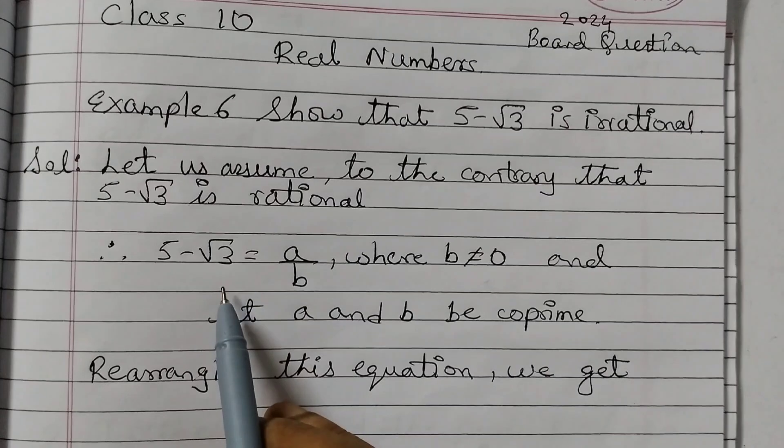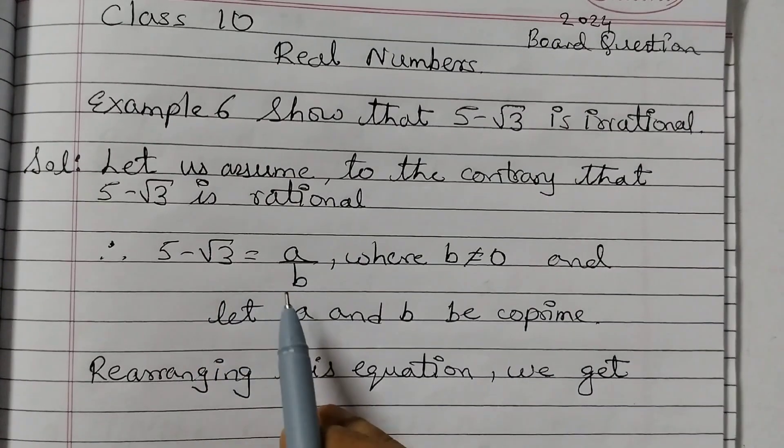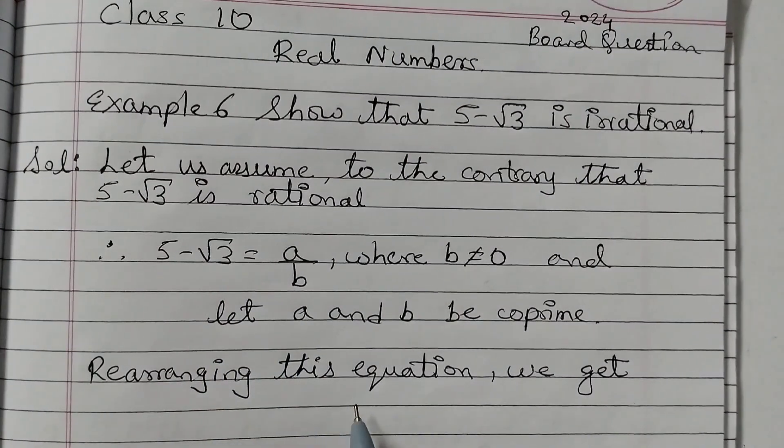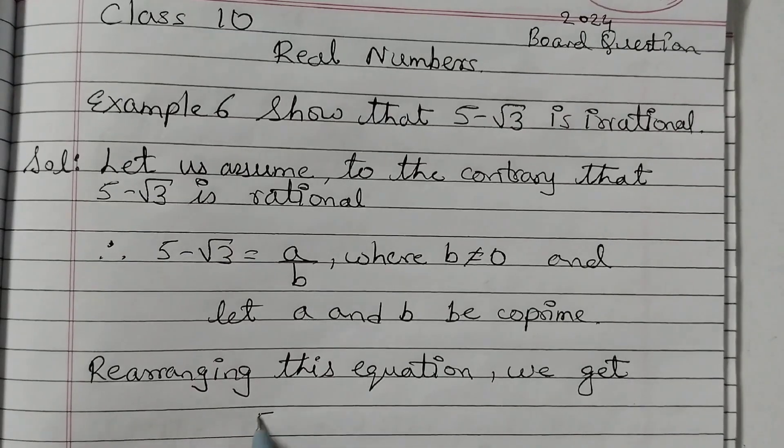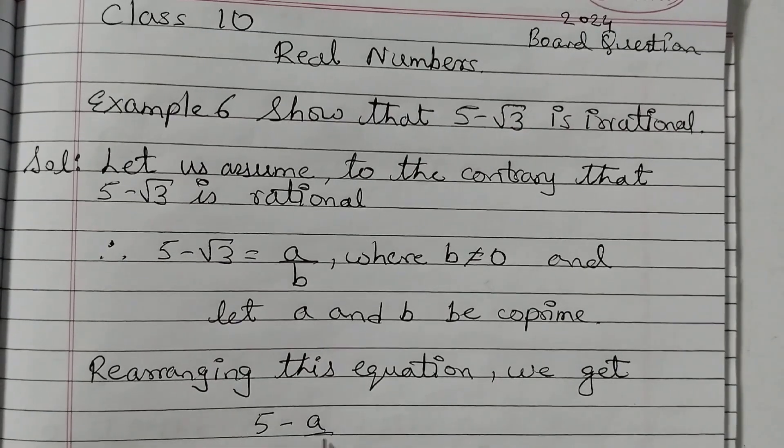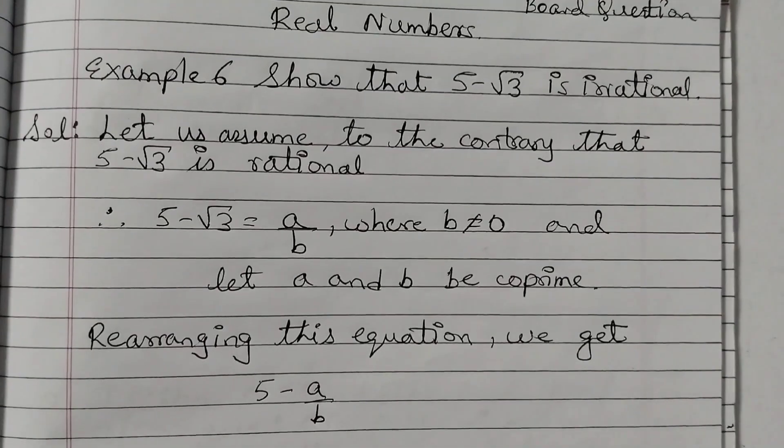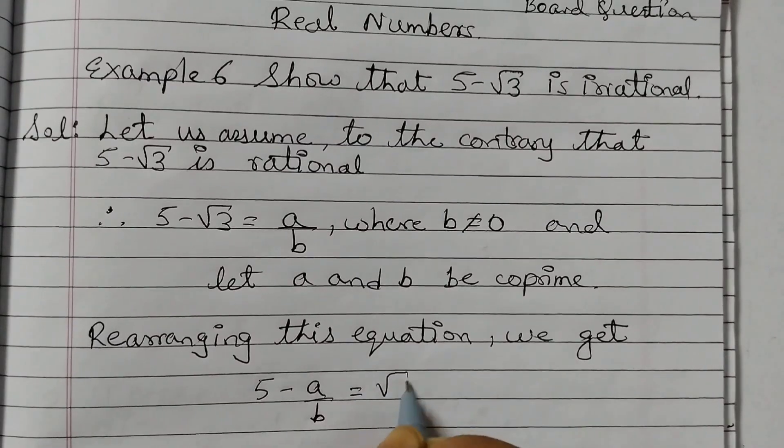So this is our assumption. According to the assumption, 5 minus root 3 is equal to A upon B. Now rearranging this equation, we get that we will take A upon B to the left side and that equals to square root of 3.